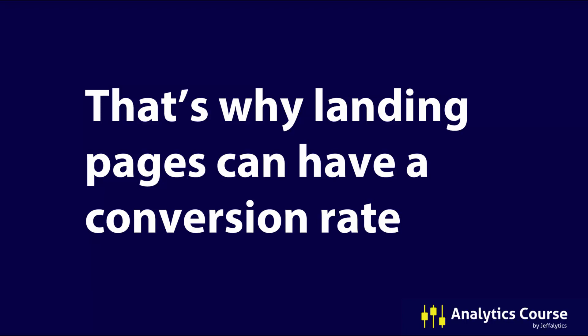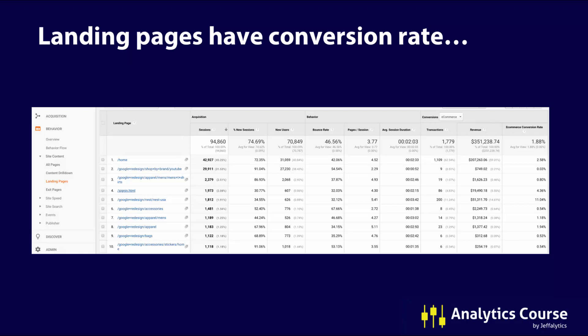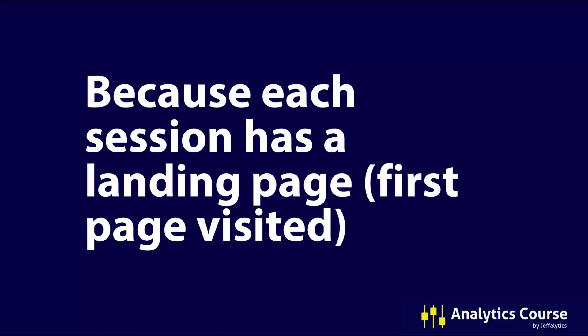Conversions are a session-level metric. During a 30-minute window you might convert once or multiple times, but it's the session that converts — that time period you're on the website — versus the page view itself. That's why you don't see a conversion rate for each page viewed. On the other hand, a landing page can have a conversion rate because it happens once per session — the first page you visit only happens once — so we can show a conversion rate because it's a session-level metric. Here's what a landing page report looks like, showing the ecommerce conversion rate for each landing page.